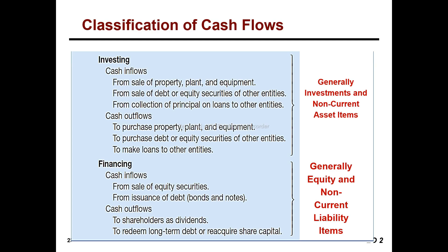For investing activity outflows, purchasing equipment or purchasing property represents a cash outflow. If you sell or dispose of equipment or investments, you have a cash inflow. For financing activity, outflows include repaying debt. Cash inflows include issuing new debt or equity. If shareholders receive a dividend, that is a cash outflow. Reacquiring shares is also a cash outflow under financing activity.